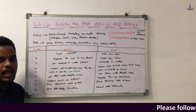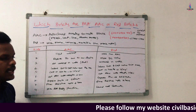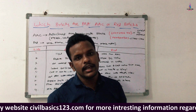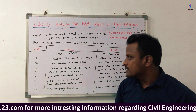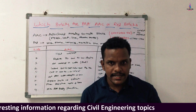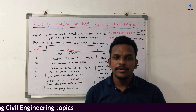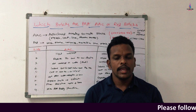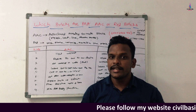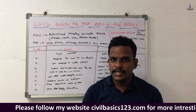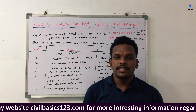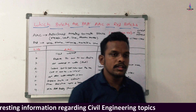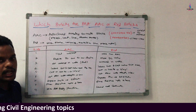The second factor is that AAC blocks reduce the dead load of the structure, whereas red brick blocks contribute a high dead load. Dead load comes under gravity loading conditions and includes the structure's own weight, floor weights, and so on. High density material increases the weight on the floor, which can also cause cracks in walls. To decrease this, lightweight concrete using AAC blocks is the solution — this is a major advantage of AAC blocks.